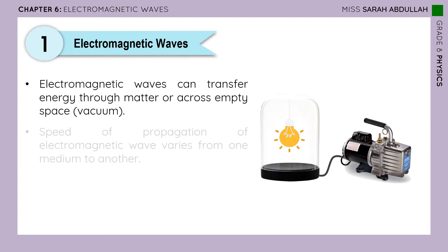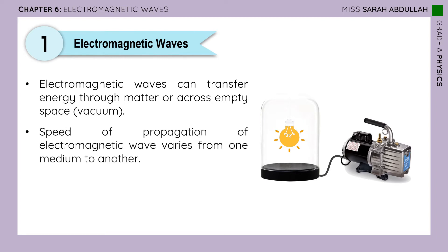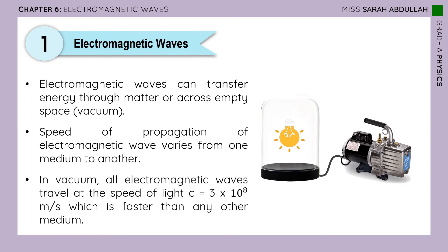The speed of propagation of electromagnetic waves varies from one medium to another, same as mechanical waves, but it is fastest in vacuum. Unlike sound waves which travel fastest through solids, electromagnetic waves travel fastest in vacuum. All electromagnetic waves travel at the speed of light, which we call c — 3 × 10⁸ meters per second — which is faster than in any other medium.